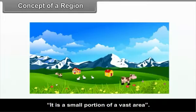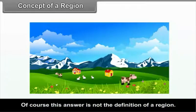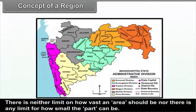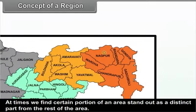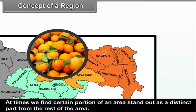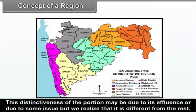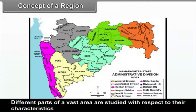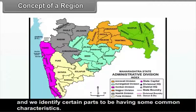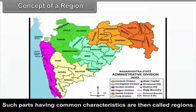The answer to the question 'what is a region' can be given in simple words as: it is a small portion of a vast area. Of course, this answer is not the definition of a region. There is neither any limit on how vast an area should be, nor any limit on how small the part can be. At times, we find certain portions of an area stand out as distinct parts from the rest of the area. Different parts of a vast area are studied with respect to their characteristics, and we identify certain parts as having some common characteristics. Such parts having common characteristics are then called regions.